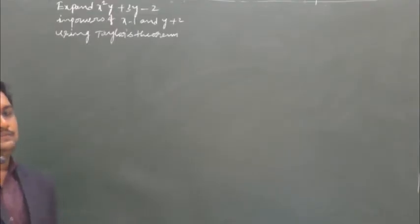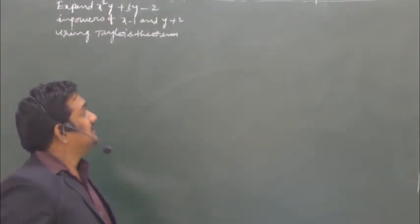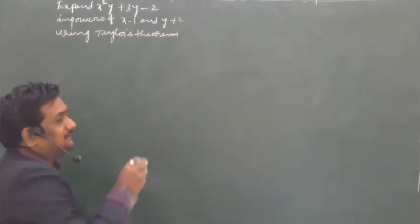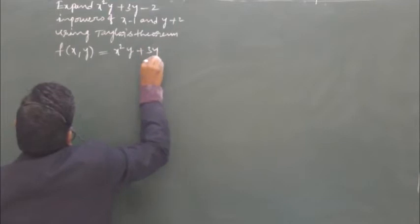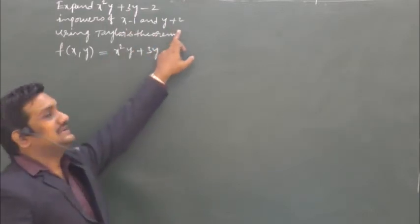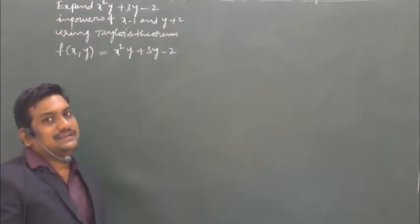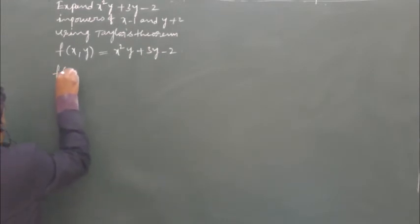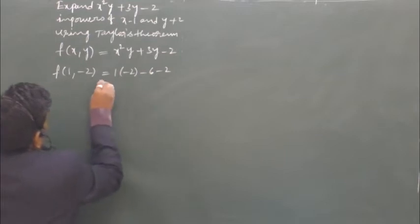Now let us take another problem on Taylor series expansion. The function is given by x²y + 3y - 2. We need to expand this function using Taylor's theorem. Let f = x²y + 3y - 2. Since we expand in powers of (x-1) and (y+2), a = 1 and b = -2. The first term is f(1,-2) = 1·(-2) + 3·(-2) - 2 = -2 - 6 - 2 = -10.